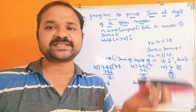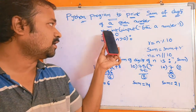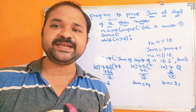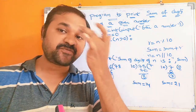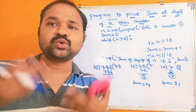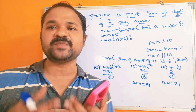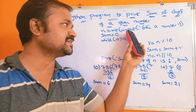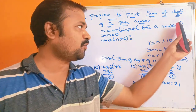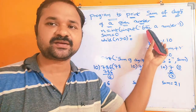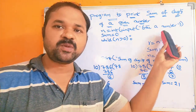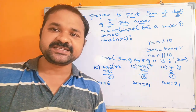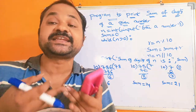Now let's see the program. The first statement is we have to read a number from the keyboard. In order to read data from the keyboard in Python we use the input function — input of 'enter a number'. But the problem with the input function is that it returns data as a string.